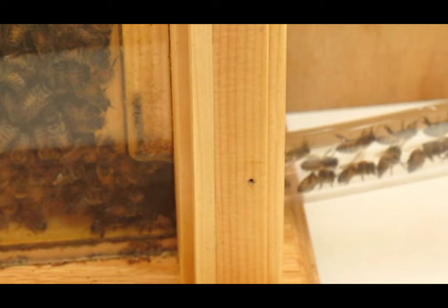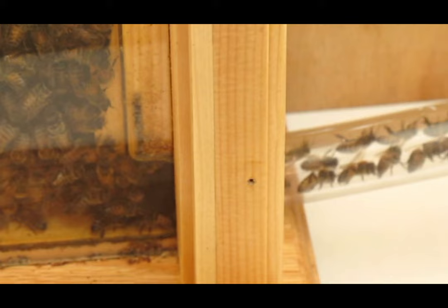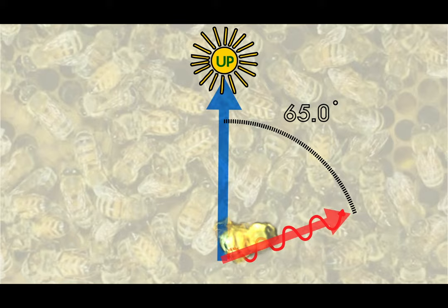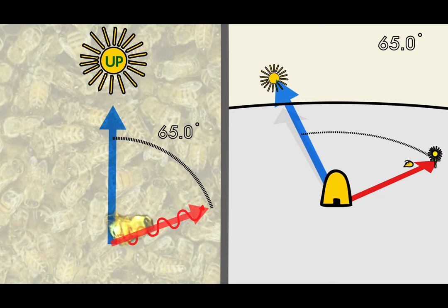Within the hive, the direction up, away from gravity, substitutes for the location of the sun. Then the angle that the bee dances compared to this up direction is the same angle a bee should fly away from the sun in order to find the target flower.